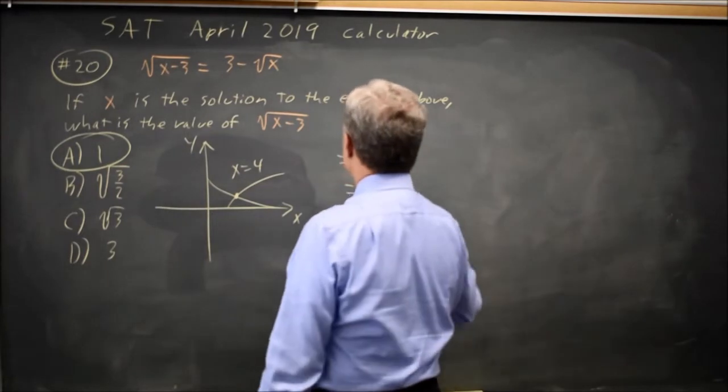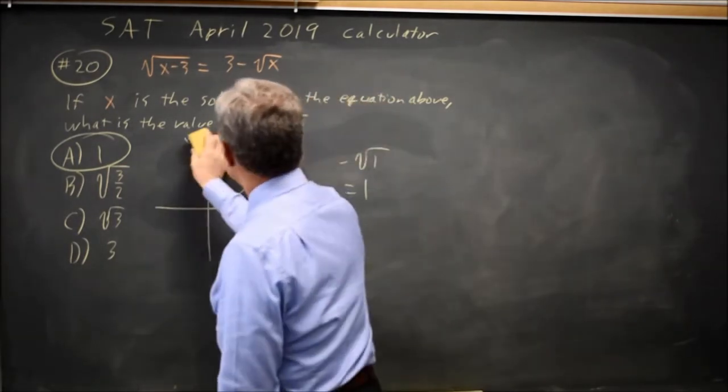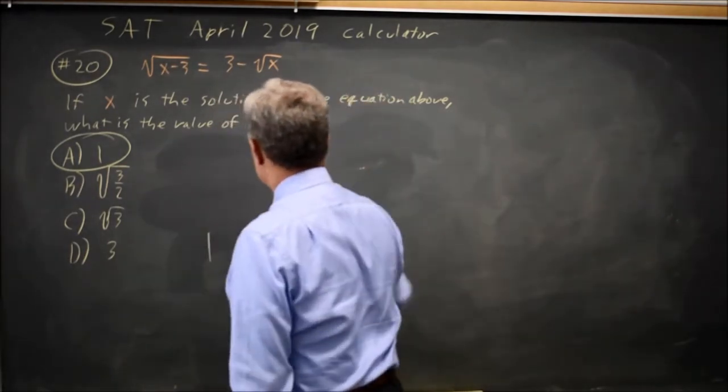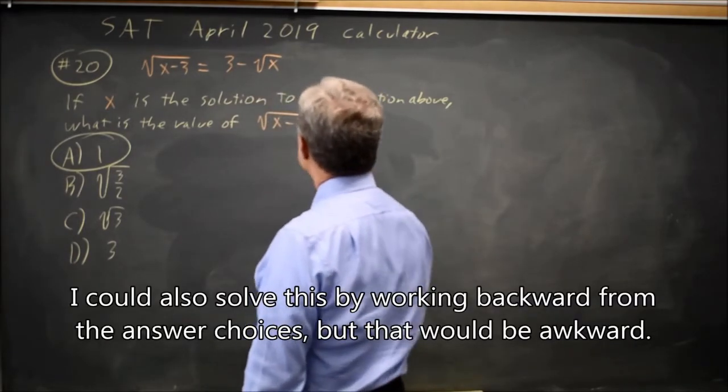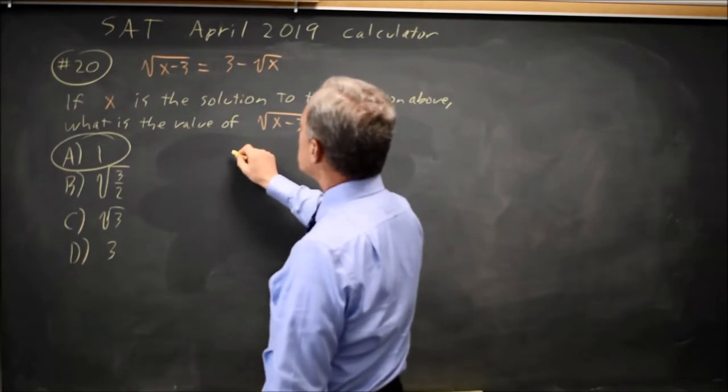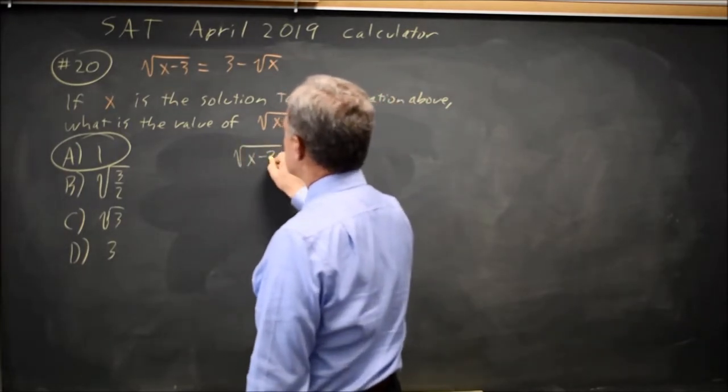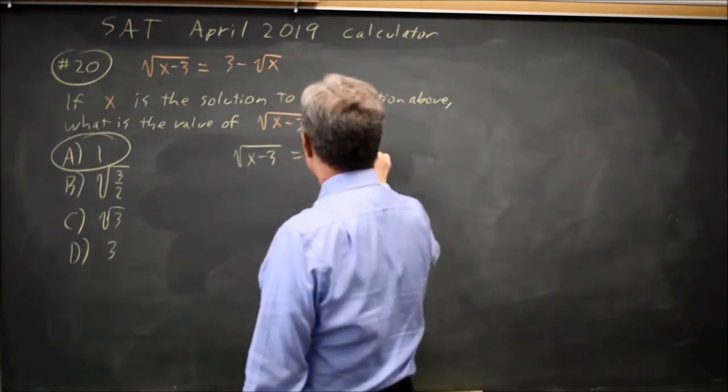But let's do that algebraically. Algebraically, I have root x minus 3 equals 3 minus root x.